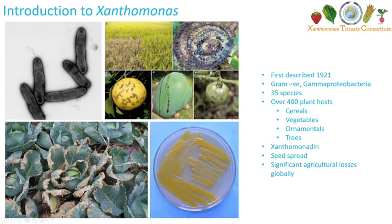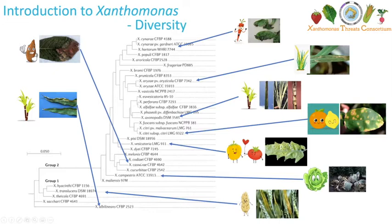A brief introduction to the diversity within the Xanthomonas genus: as I said, there are about 35 Xanthomonas species described, and the nomenclature is normally associated with the first host plant on which they are identified, which can often be quite confusing. A number of the species also have subspecies pathovars, which have varying host ranges, which we'll discuss a little bit later on.